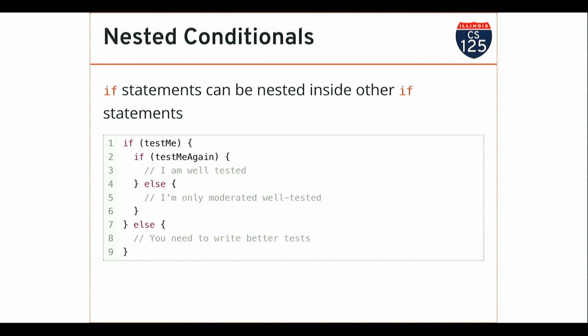The blocks of code you enter in an if statement are just more code — there's nothing magical about them. Inside those blocks, you can do whatever you want, including having another if statement. So if I have a nested if inside an outer if, I'd need to know two things to determine what happens: is the outer condition true or false, and is the inner condition true or false. Based on those two pieces of information, I can determine exactly how my program flows through this code.